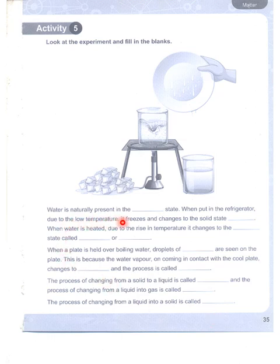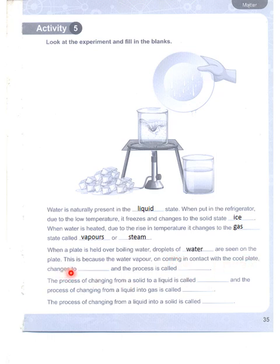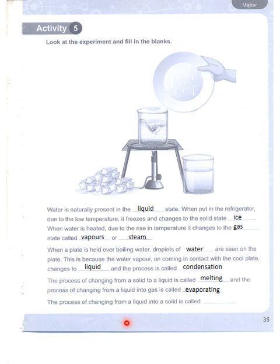Water is naturally present in the liquid state. When put in the refrigerator, it freezes and changes to the solid state — that is ice. When heated, it changes to the gas state called vapors or steam. When a plate is held over boiling water, droplets of water form because water vapor contacts the cool plate and changes to liquid — this process is called condensation. Solid to liquid is melting; liquid to gas is evaporating; liquid to solid is freezing.